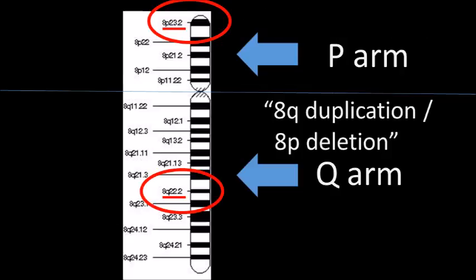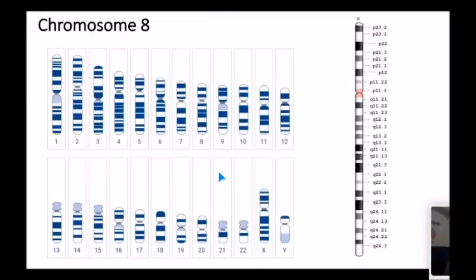You may hear something that combines p and q such as duplication 8q deletion 8p. That means that there is more than one abnormality on the chromosome and both arms are affected. This can also happen with more than one chromosome. We used chromosome 8 for this example but in general this could be applied to the other chromosomes as well.